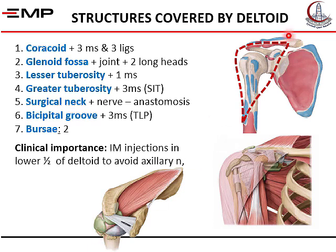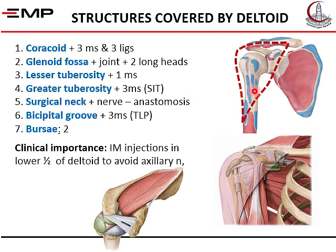The clinical importance of knowing all these structures covered by the deltoid is to know where to safely give an intramuscular injection. If you inject high up, there is a great risk of injuring the axillary nerve, causing paralysis of the deltoid. Injecting in the lower part is safer.